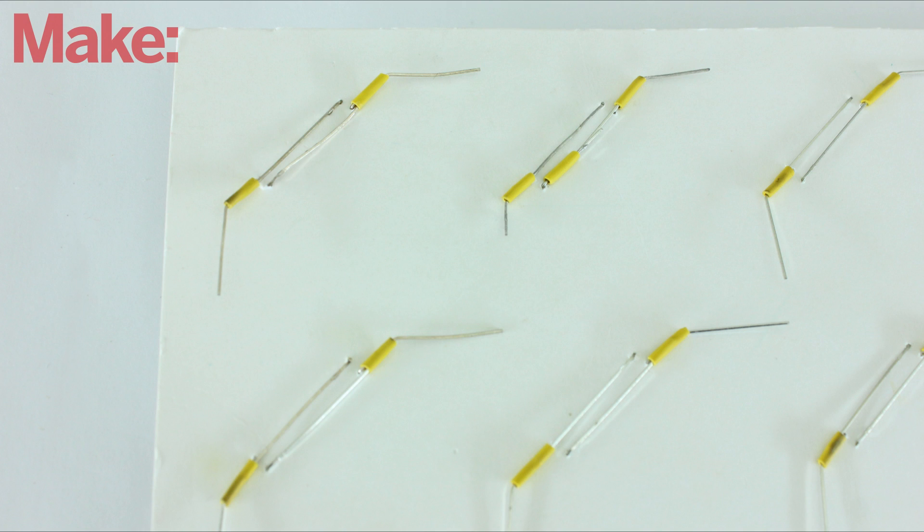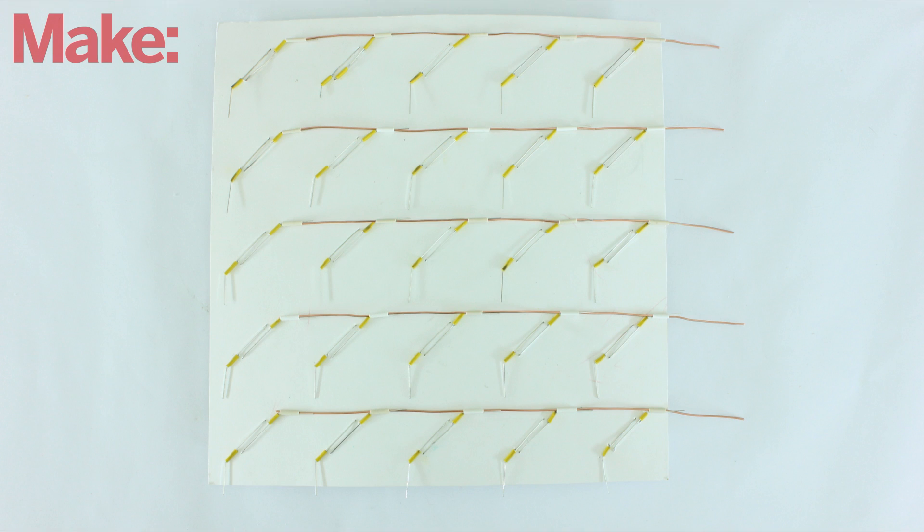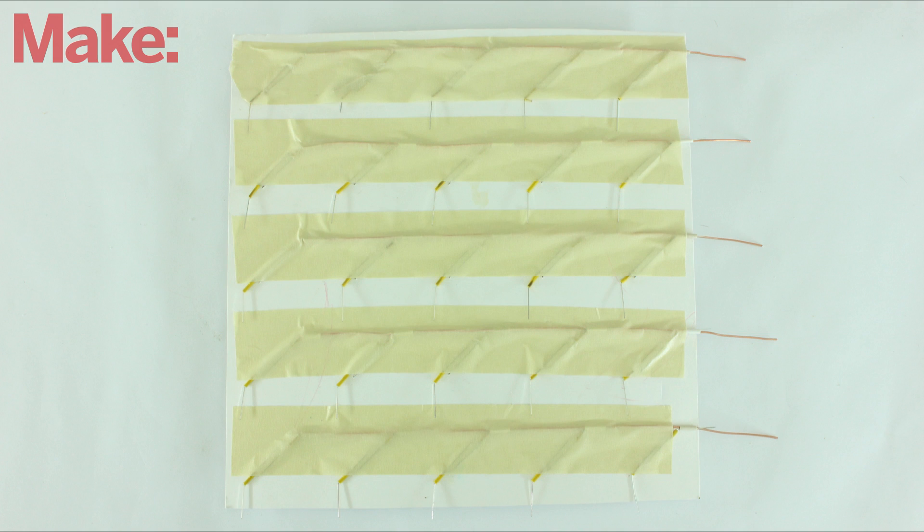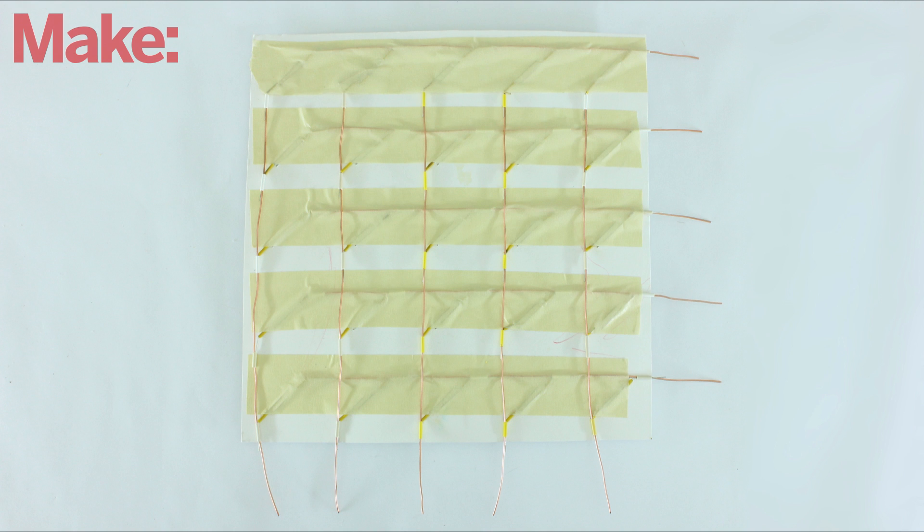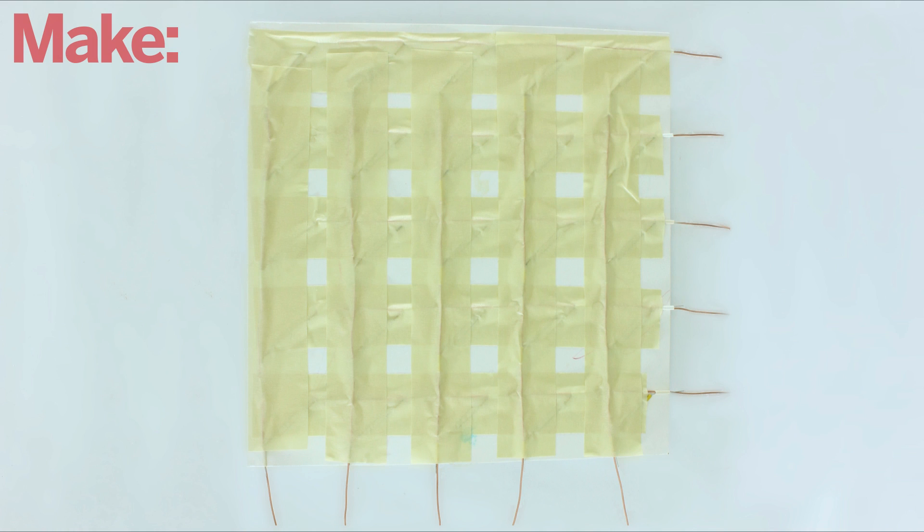Now we need to connect the individual squares together into rows and columns. First, I connected the anodes in each row together with large pieces of copper wire. Then I applied tape on top of it to help insulate it. Next I connected the cathodes in each column together, and I applied more tape to insulate these connections.